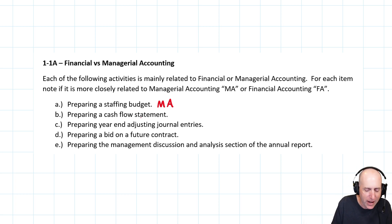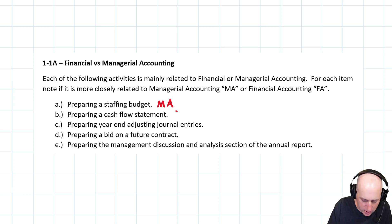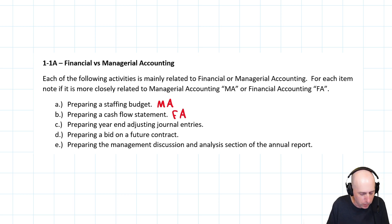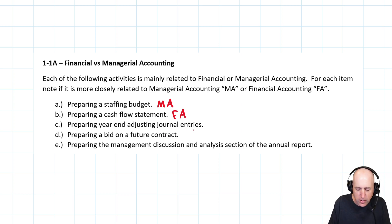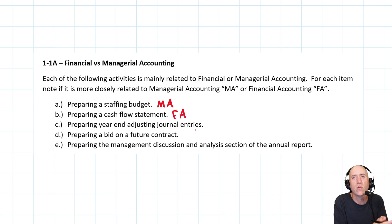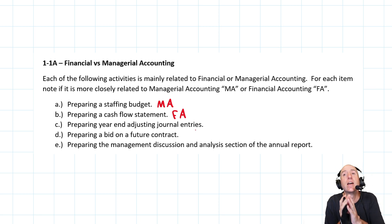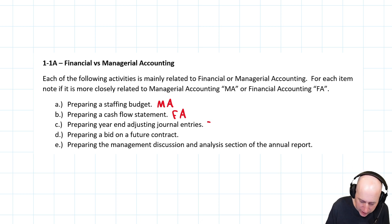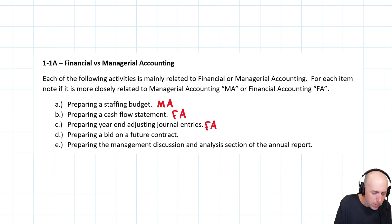Preparing a cash flow statement — as an investor, I want to know their cash flows. This is a financial accounting report. Preparing year-end adjusting journal entries: journal entries serve financial statements, so that is usually a financial accounting activity, and this certainly would be that.